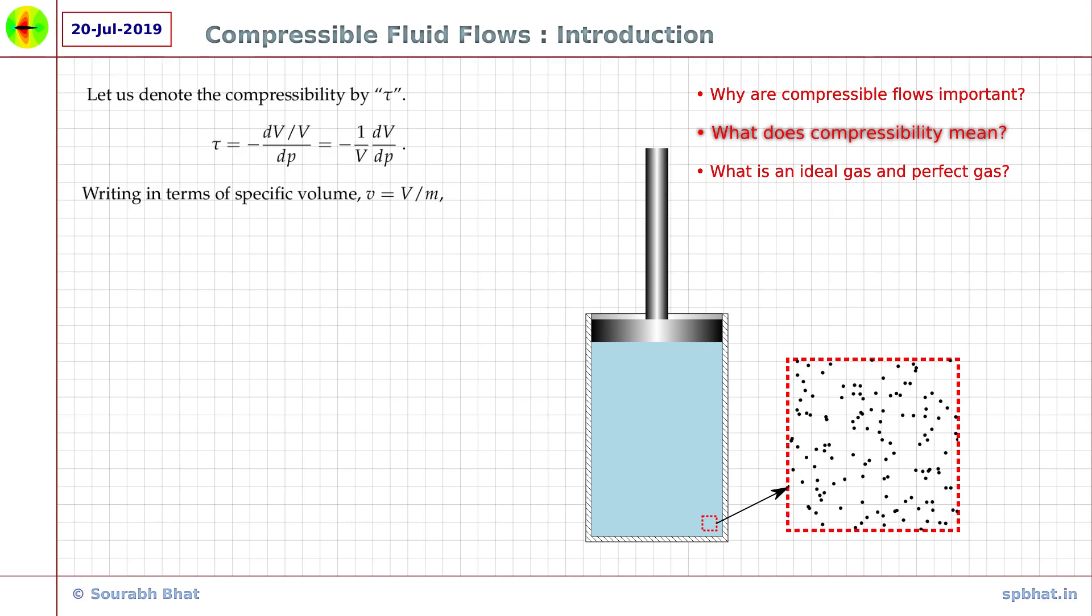Let us slightly modify this equation to write in terms of specific volume. Specific volume is defined as the volume per unit mass. So, let's divide the numerator and denominator by mass m. This gives us a similar looking equation in terms of specific volume.